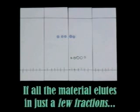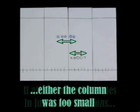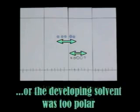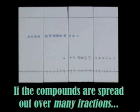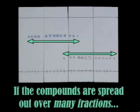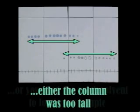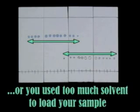If all of the material elutes in just a few fractions, then the column may have been too small, or the developing solvent too polar. On the other hand, if the compounds are spread out over many fractions, then the column may have been too tall, or you used too much solvent to load your sample.